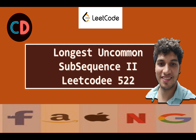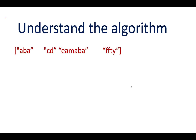Longest Uncommon Subsequence II, LeetCode 522. Let's understand the question with a slightly different example. The first string that we have is 'aba', then 'cd', then 'eamaaba', then 'ba', and the fourth one is 'ffdy'. We are interested in finding that particular string out of all these four strings which is uncommon to all the other strings.